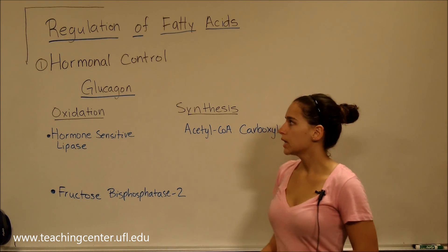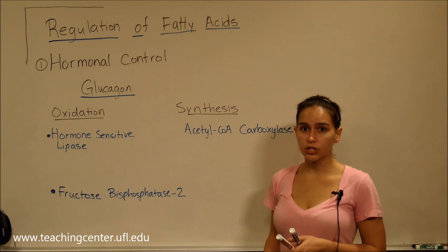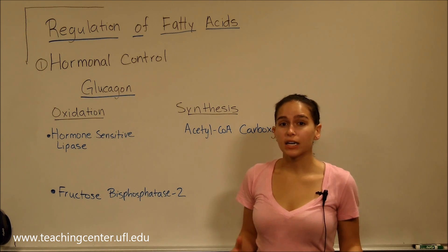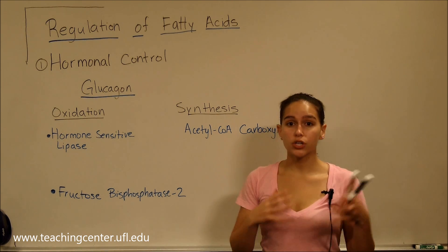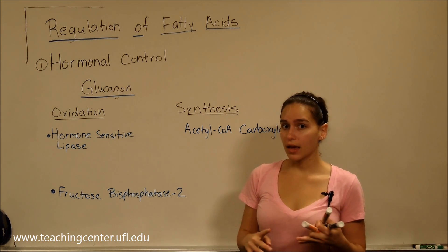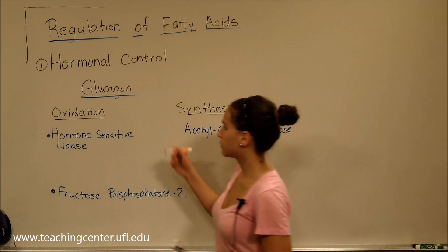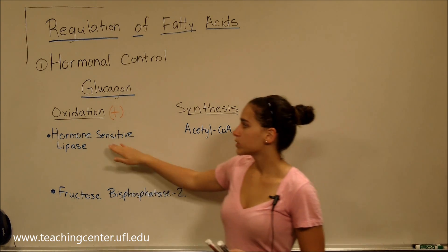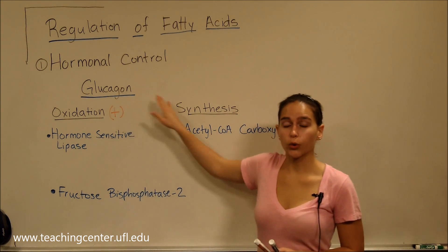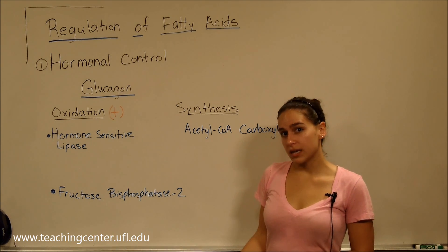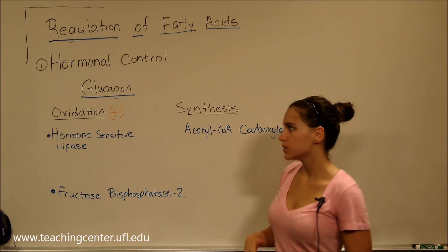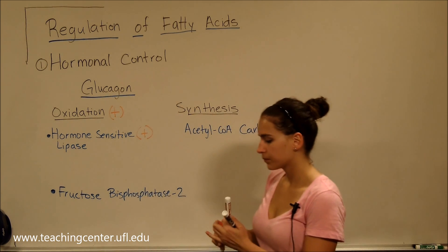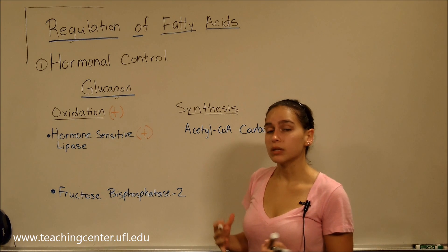Starting with hormonal control: when glucagon is released, we're in a state of low energy, meaning we need to get energy from sources like glucose and fatty acids. So oxidation is going to be activated. The main enzyme activated is hormone-sensitive lipase by phosphorylation, because glucagon activates the pathway that activates PKA, and PKA phosphorylates other enzymes to make them active. So hormone-sensitive lipase is phosphorylated and active.